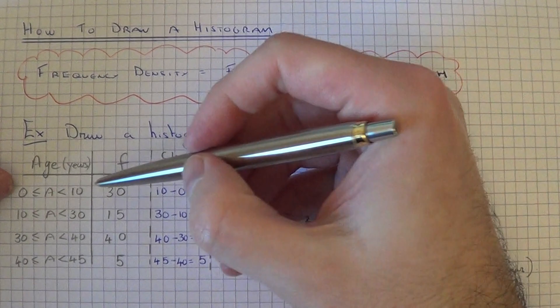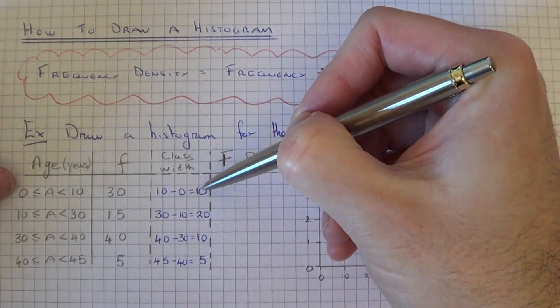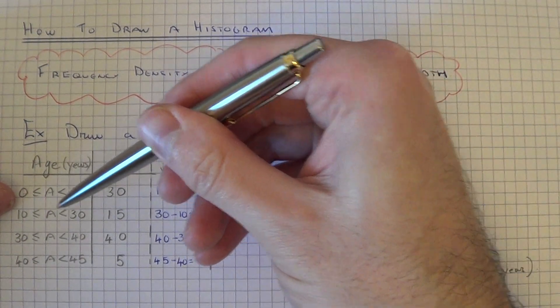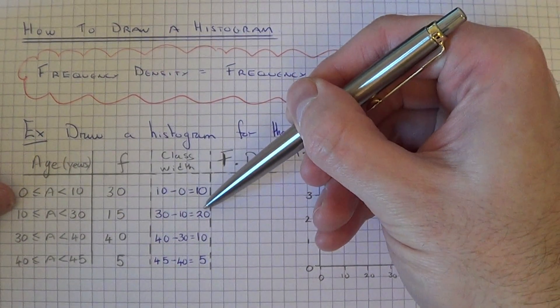So the first one, it will be 10 take away 0, which is 10. For the second one, it will be 30 take away 10, which is 20.